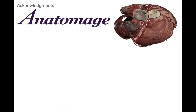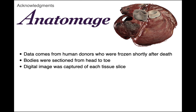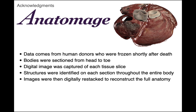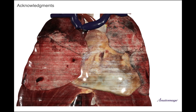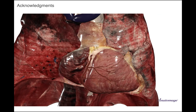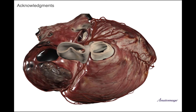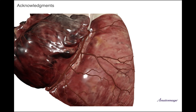Just want to give a huge shout out and thanks to Anatomage. Their data comes from human donors who were frozen shortly after death, and then the bodies were sectioned from head to toe. A digital image was captured of each tissue slice, and then the structures were identified in each section throughout the entire body, head to toe. The images were then digitally restacked to reconstruct the full anatomy. That's why these digital cadavers from Anatomage resemble real human tissue, and why you can view anatomy like has never been done before in a different way than through dissection of a cadaver. Really, really cool. Thanks to Anatomage.